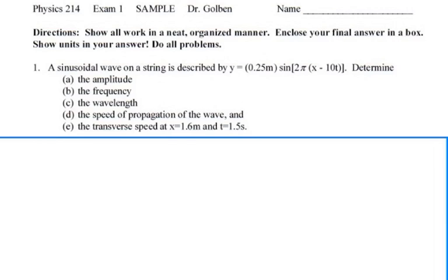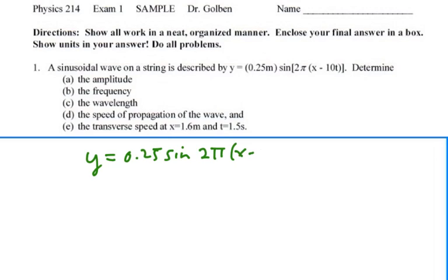Here's problem number one on the 214 sample test. We have a sinusoidal wave on a string described by the wave function y = 0.25 meters times sine of (2 pi x minus 10 t). We need to determine the amplitude, frequency, wavelength, speed of propagation, and transverse speed at x = 1.6 meters, t = 1.5 seconds.